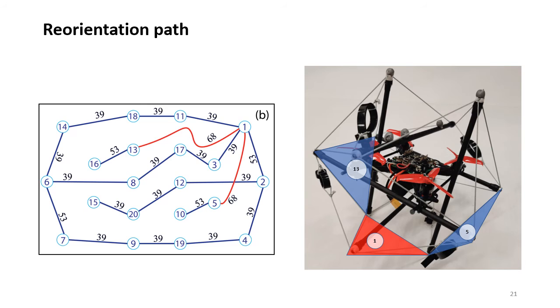To solve the problem, we enable two special rotations, from contact face 13 to 1 and face 5 to 1. These rotations are not about edges on the shell. Instead, they are about nodes. After enabling these two rotations, the graph is fully connected again.